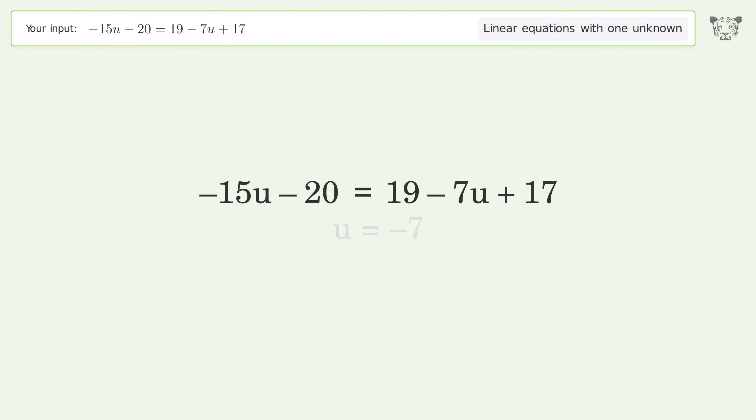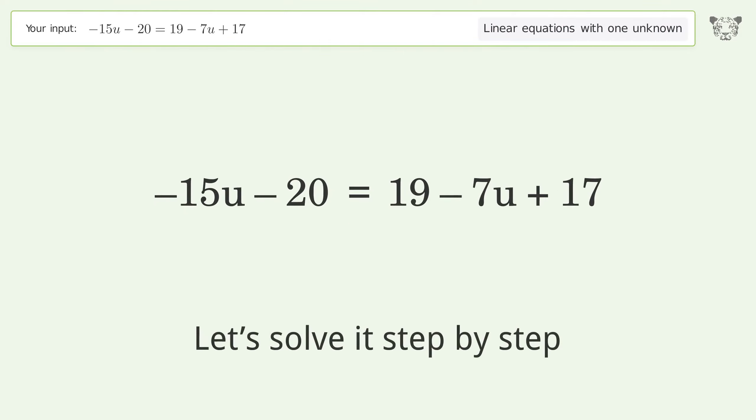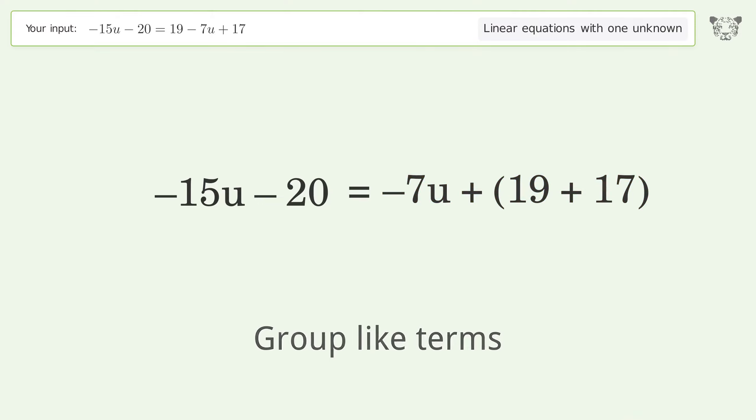You asked Tiger to solve this. It deals with linear equations with one unknown. The final result is u equals negative 7. Let's solve it step by step. Simplify the expression.